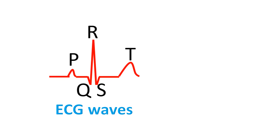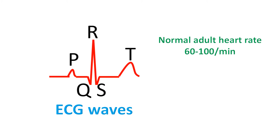Normal values for any measurement may vary with age, body size, gender, and the population being assessed. Still, some normal ranges are useful for routine use while interpreting an ECG. To start with is the simple measurement of heart rate from the ECG. The normal range of heart rate is taken as 60 to 100 per minute in an adult in the resting state. A newborn infant can have a resting heart rate around 140 per minute.